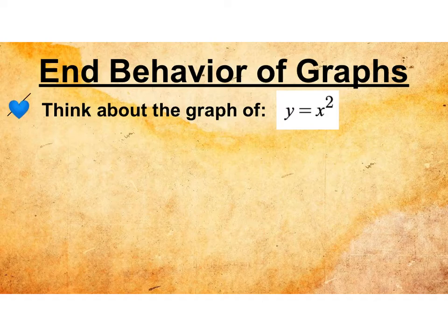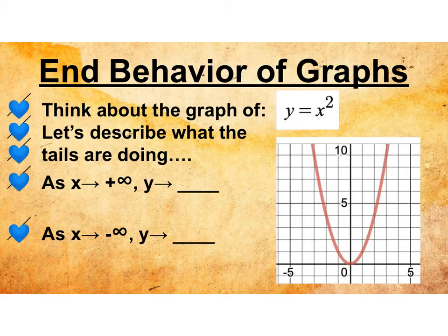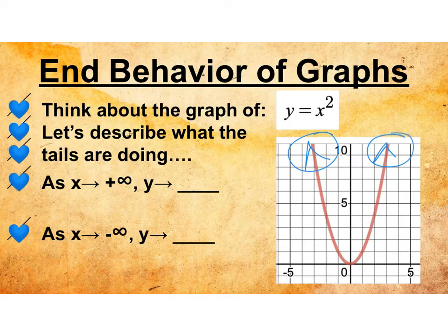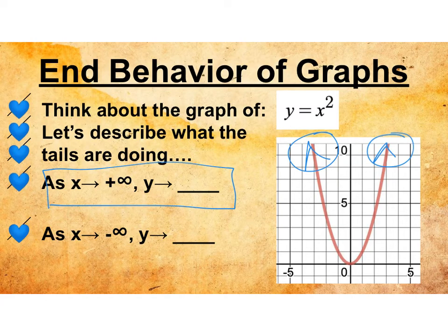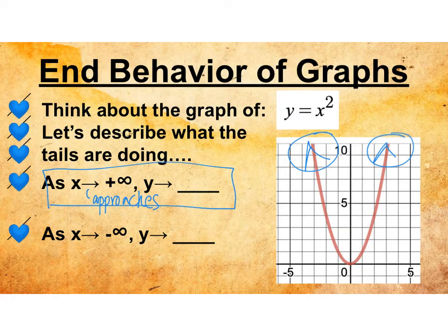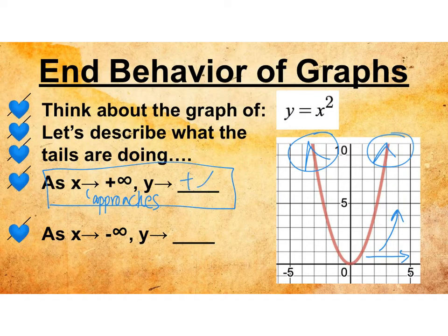Think about what this graph looks like — y equals x squared. Can you picture that in your head? We have a parabola, and we would have arrowheads drawn here. So when we are describing the end behaviors of a graph, we have a new sentence. As x approaches positive infinity, y approaches what? As x is getting bigger and bigger, y is also getting bigger and bigger, so it's approaching positive infinity.